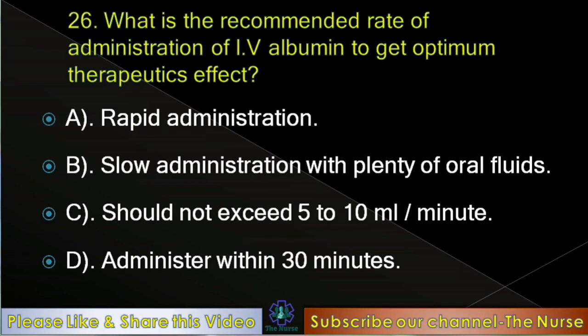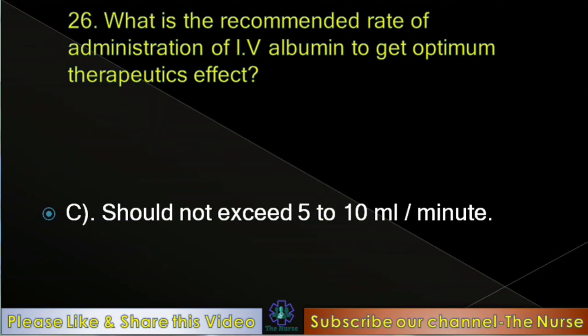Next question: What is the recommended rate of administration of IV albumin to achieve optimum therapeutic effect? Options: Rapid administration, slow administration with plenty of oral fluids, should not exceed 5–10 ml per minute, administer within 30 minutes. Correct answer: Should not exceed 5–10 ml per minute.